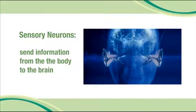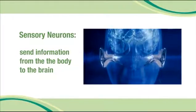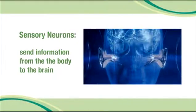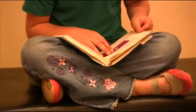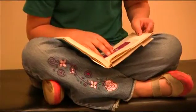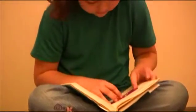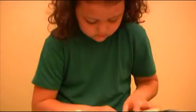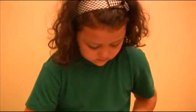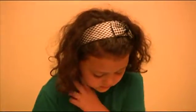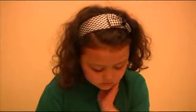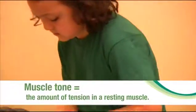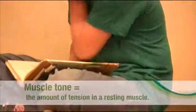Information goes back and forth between all the parts of the body and the brain, all the time. When we are awake, even when we are not actively doing something, our muscles have just enough tension in them to keep our basic posture and to be ready to move as soon as they get a signal from the brain. This base level of tension in the muscles is called muscle tone.